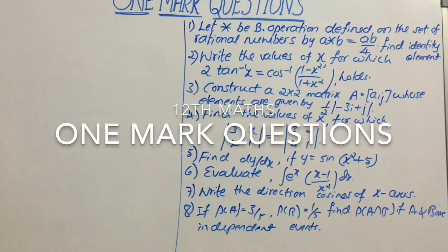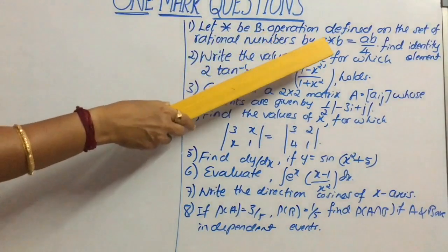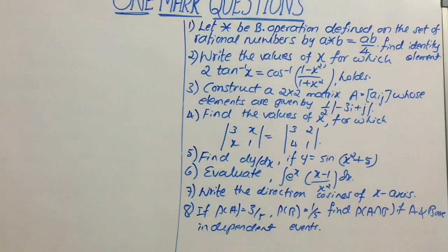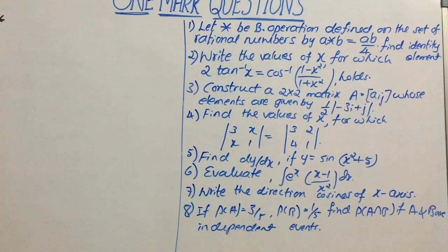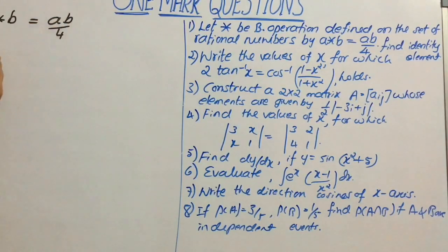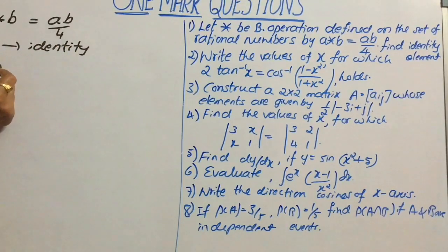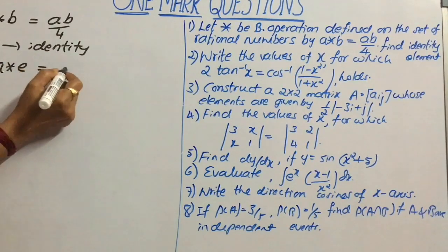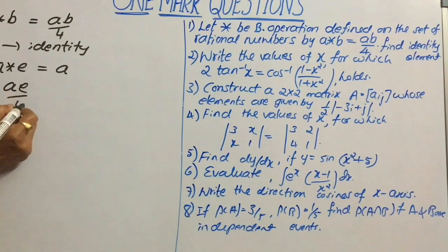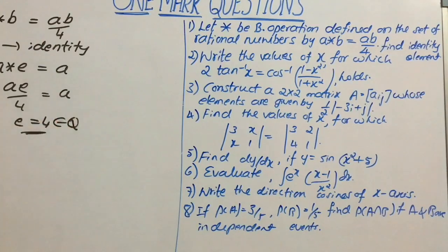Let star be a binary operation defined on the set of rational numbers, defined by a star b equal to ab by 4. Find identity. Suppose e is the identity. Then according to the definition, a star e must equal a, that is ae by 4 equals a, so e equals 4, which is the required value of identity and belongs to the set of rational numbers.